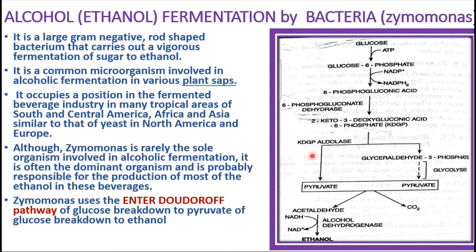Zymomonas occupies an important position in the fermented beverage industries, mainly in tropical areas of South and Central America, Africa, and Asia. Although Zymomonas is rarely the sole organism in alcohol fermentation, it becomes the dominant organism responsible for producing most of the ethanol in beverages. It follows the Entner-Doudoroff pathway to give rise to ethanol. From pyruvate, in the presence of decarboxylase enzyme, pyruvate is converted into acetaldehyde and carbon dioxide, and from acetaldehyde, alcohol dehydrogenase gives rise to ethanol.